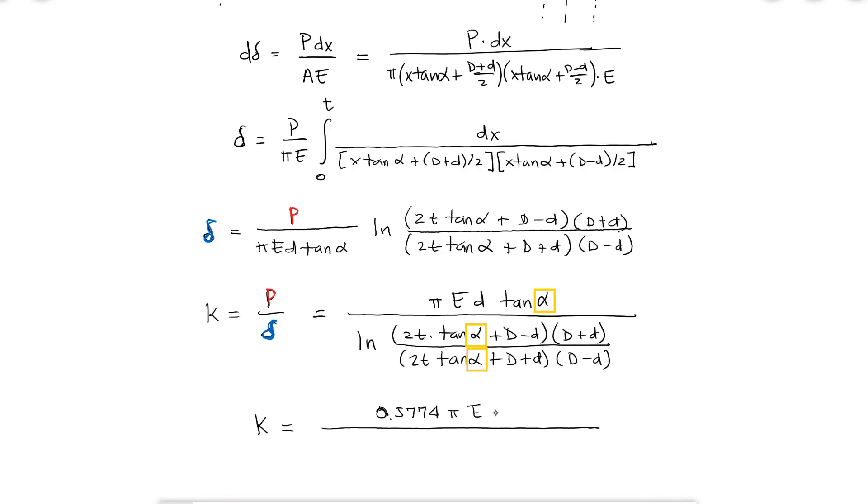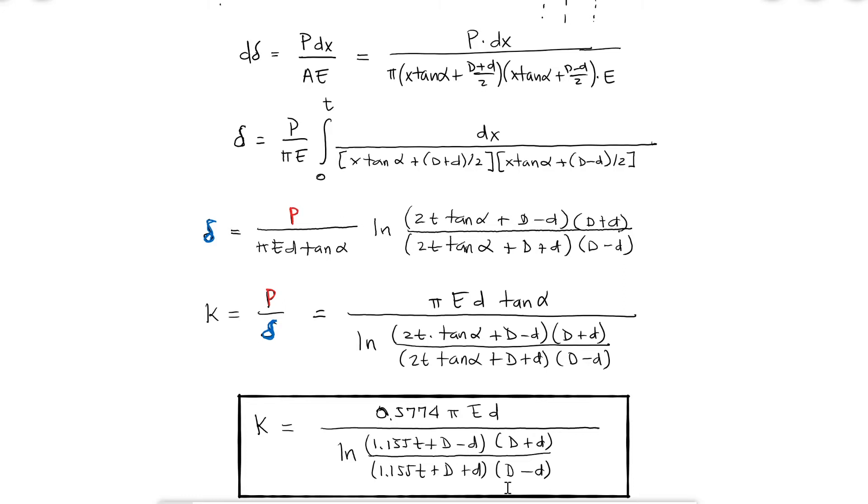With alpha equal to 30 degrees, we get a better expression for k. And this is the expression you would use for each section of the member's calculations.